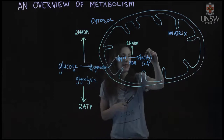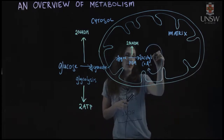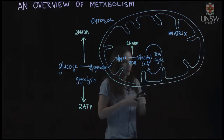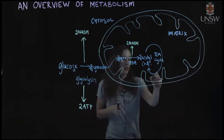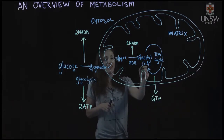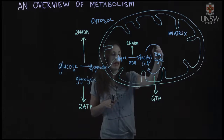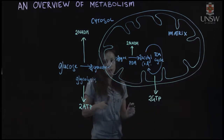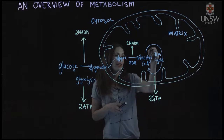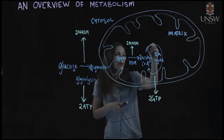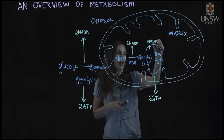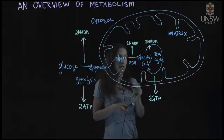The Acetyl-CoA then enters the TCA cycle. The products of the TCA cycle include a GTP, which is equivalent to an ATP. With two Acetyl-CoA coming in, we have two GTP being produced overall from oxidizing glucose. Other products of the TCA cycle include NADH — for each round of the TCA cycle, three NADH are produced.